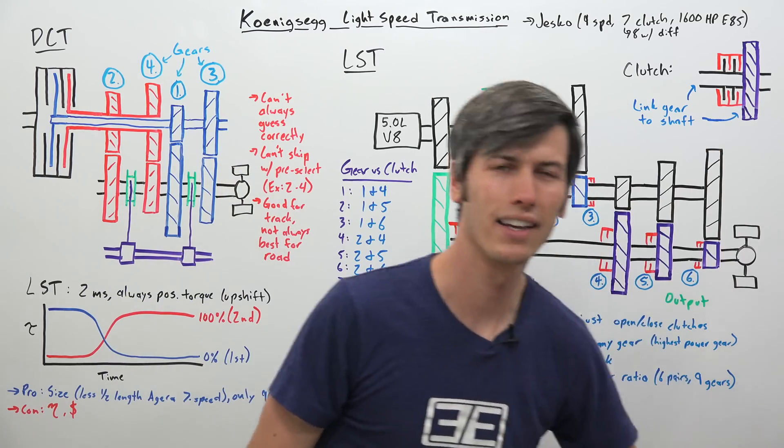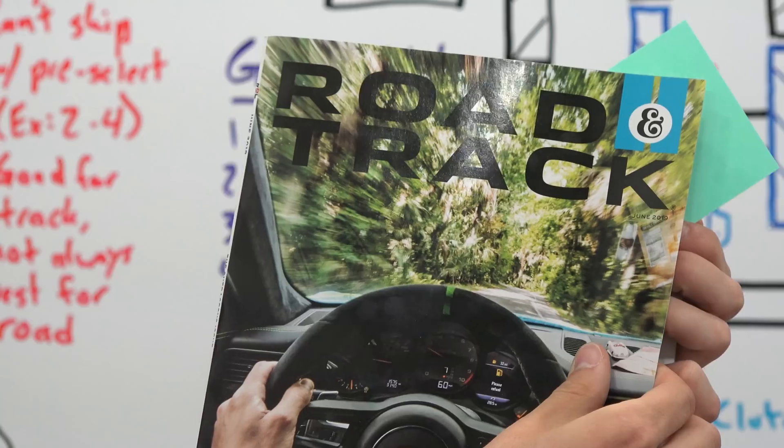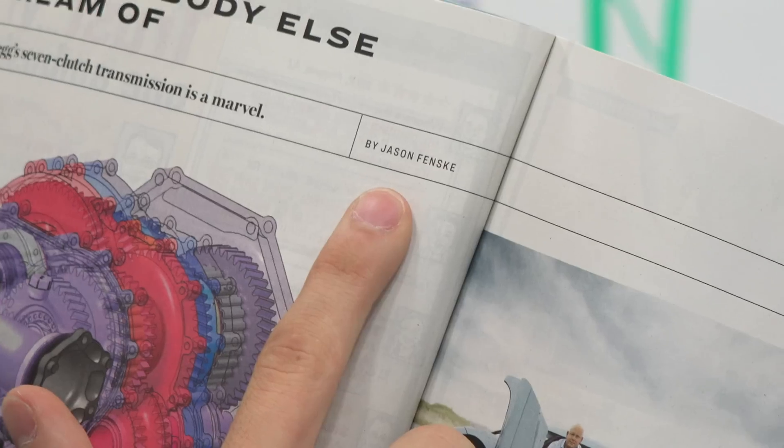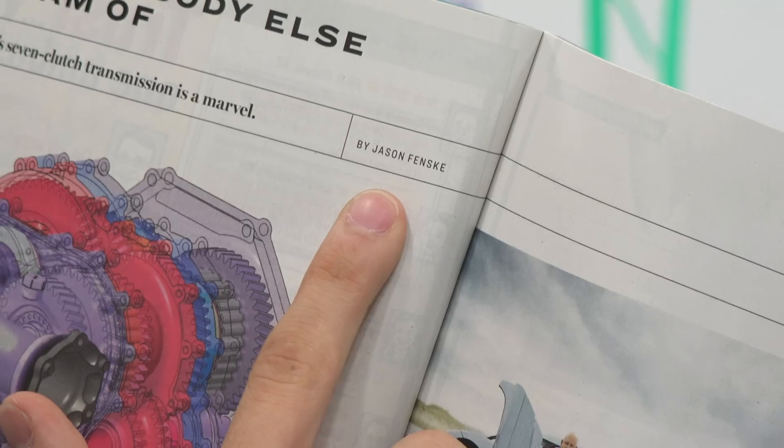Did someone say road and track? Well, it just so happens that if you take the June issue and turn to page 16, you will find an article that I wrote on the Koenigsegg Jesko transmission. How cool is that?